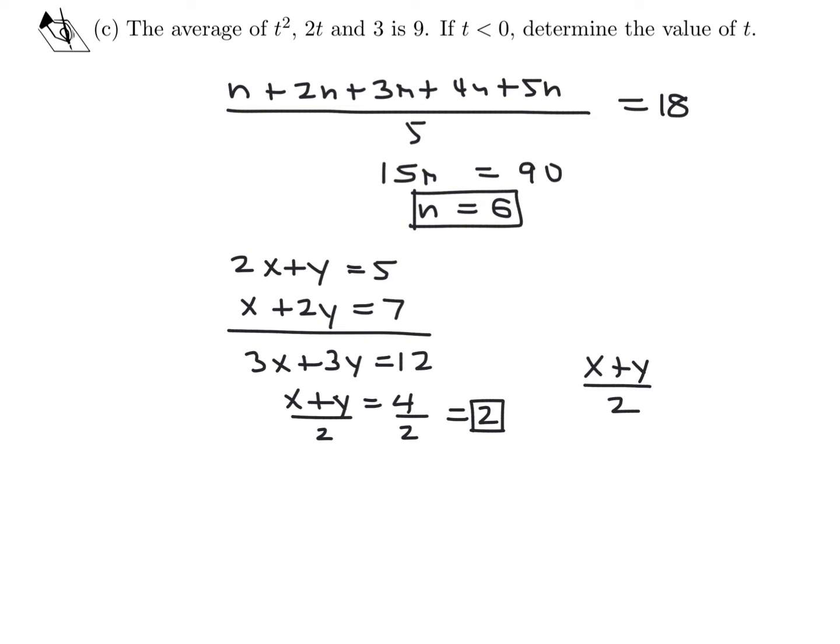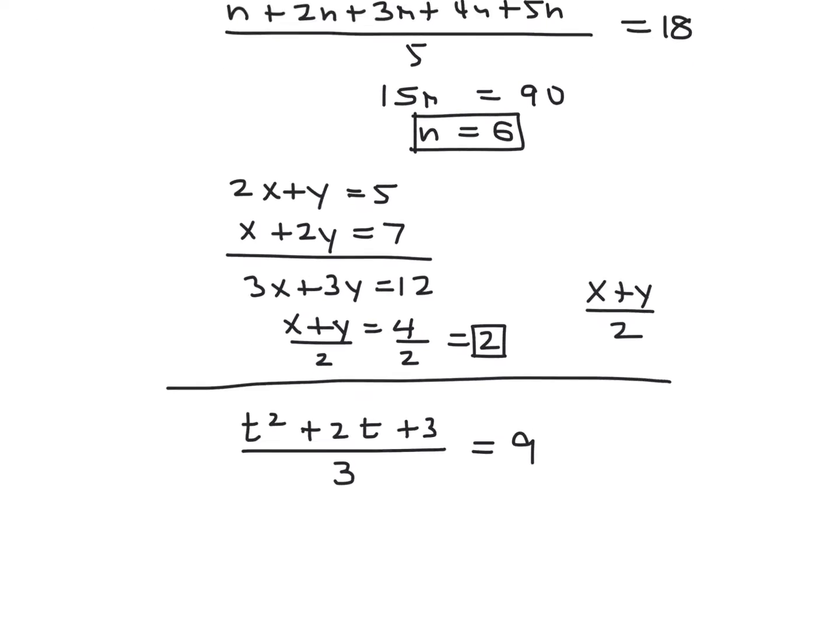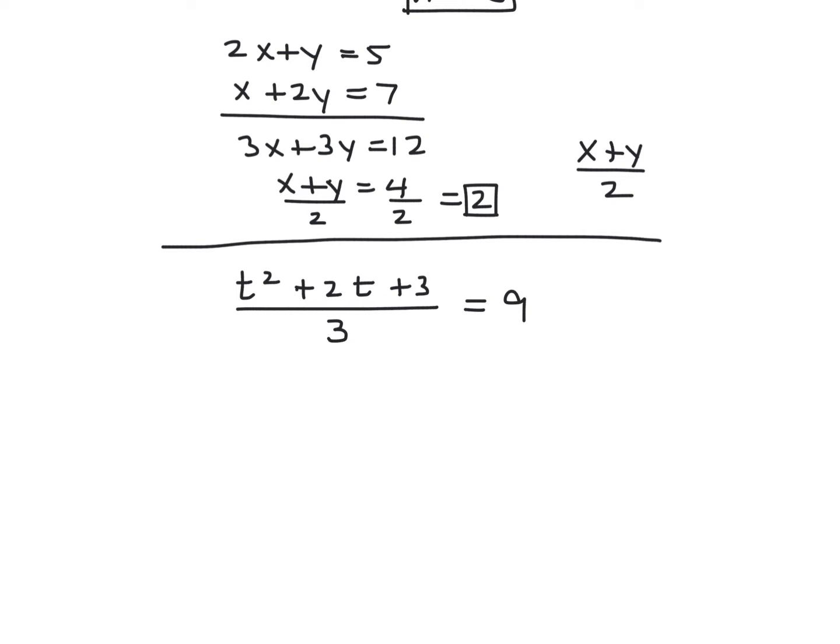The average of t², 2t, and 3 is 9. If t < 0, determine the value of t. So t² + 2t + 3, the average, we divide by 3 since there's 3 terms, equals 9. This is the algebra, and regardless of the outcome, we have to choose the value of t that's less than 0. That makes me think there's two values, because this is most likely a quadratic.